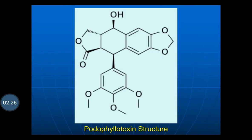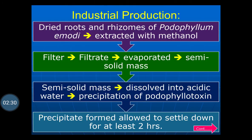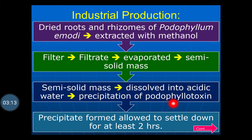This is the chemical structure of podophyllotoxin. For industrial production, dried roots and rhizomes of Podophyllum emodi are extracted with methanol. The methanol extract is filtered and the filtrate evaporated to obtain a semi-solid mass. This semi-solid mass is later dissolved in acetic acid, causing precipitation of podophyllotoxin.